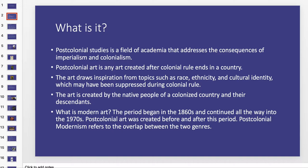We're going to look at a few different examples, and we're also getting into the overlap with modern art. Modern art begins in about the 1860s and continues all the way into the 1970s. Post-colonial art is technically created before and after this period, because it just depends on when a country gained its independence. Post-colonial modernism refers to the overlap between the two genres, and that's what we're looking at today.